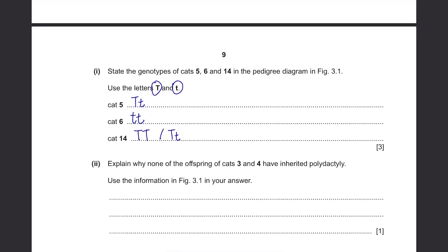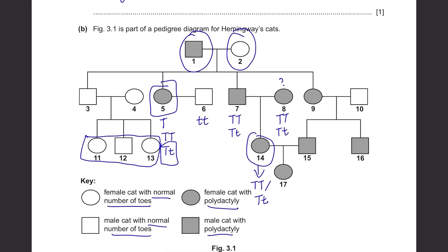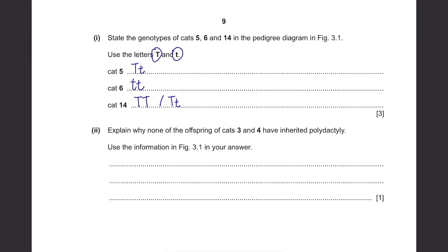Explain why none of the offspring of cats 3 and 4 have inherited polydactyly, using Figure 3.1. The offspring of cats 3 and 4 all have a normal number of toes. This is because cats 3 and 4 are homozygous recessive (tt). If they carried at least one T allele for polydactyly, then at least one of their offspring should have polydactyly — but none do. So the answer is that cats 3 and 4 are homozygous recessive and do not have the allele for polydactyly.